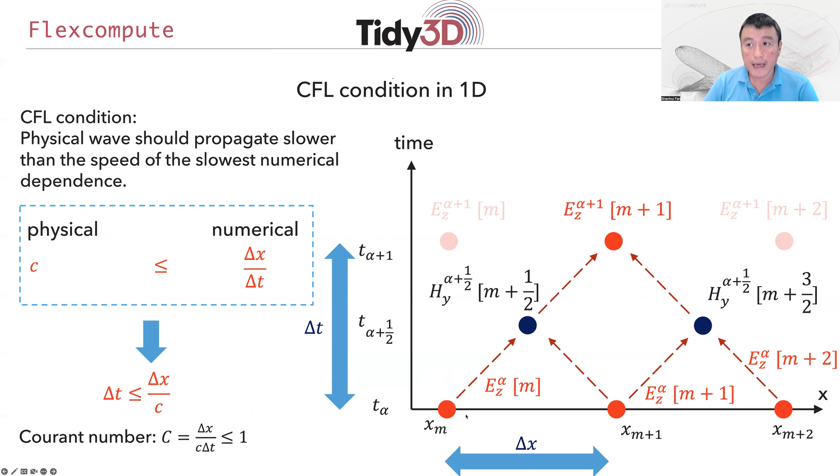The important point is that over a total time of Δt, the information propagates over a distance of Δx. By data dependency, after time stepping over time Δt, the electric field at spatial point xm+1 now knows about the electric field at xm. Numerically, the fastest speed that information can propagate is Δx divided by Δt.